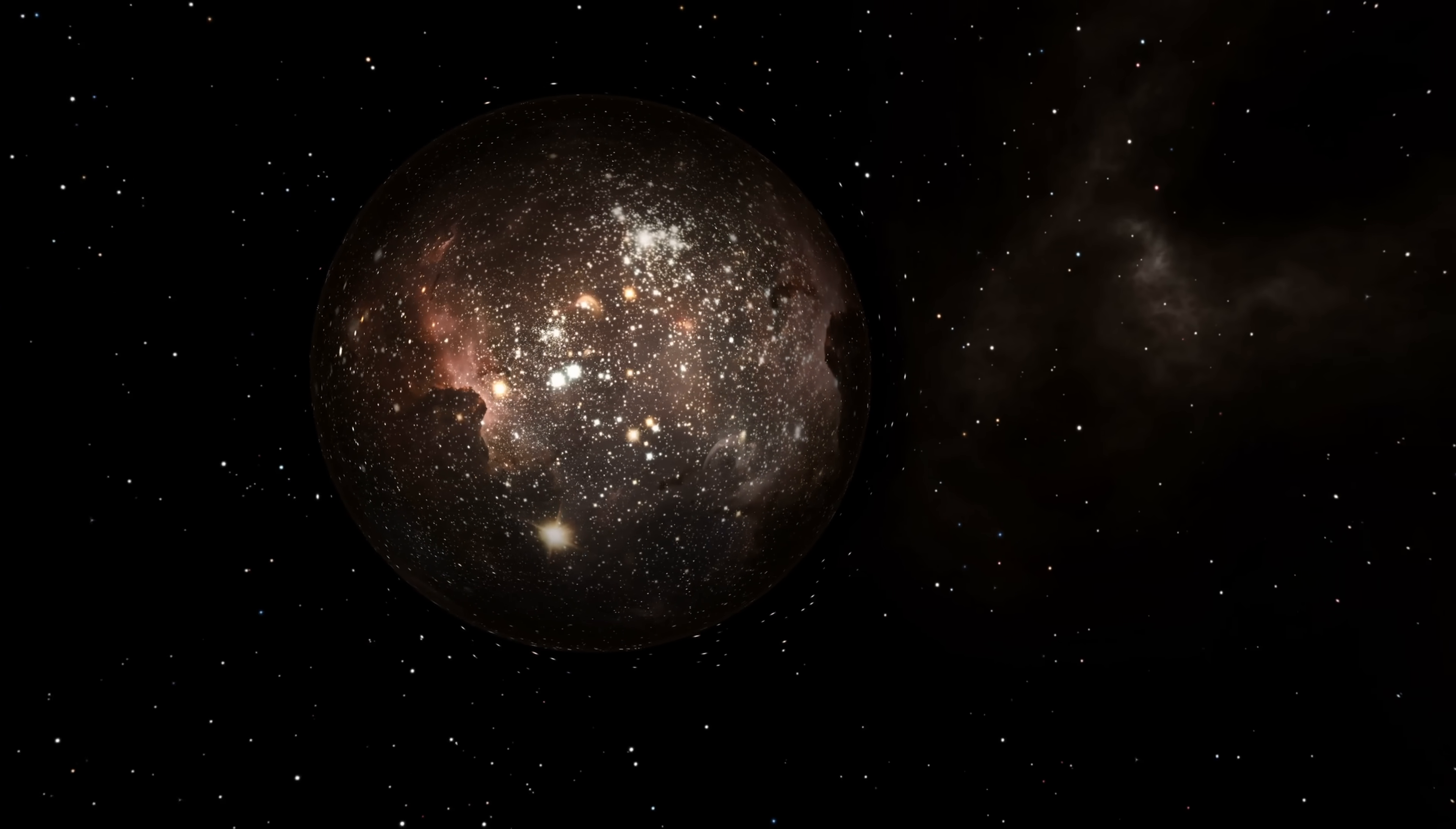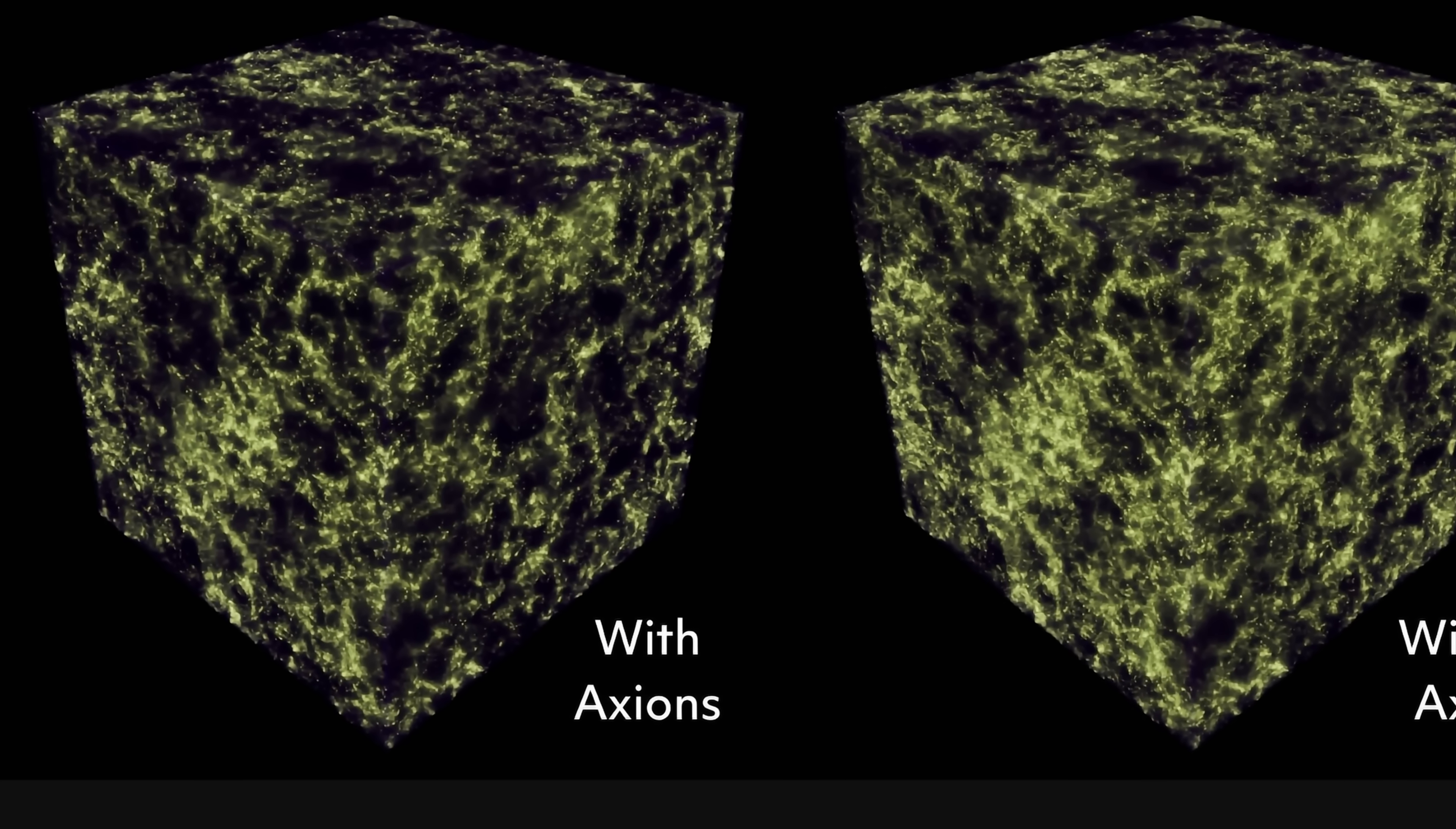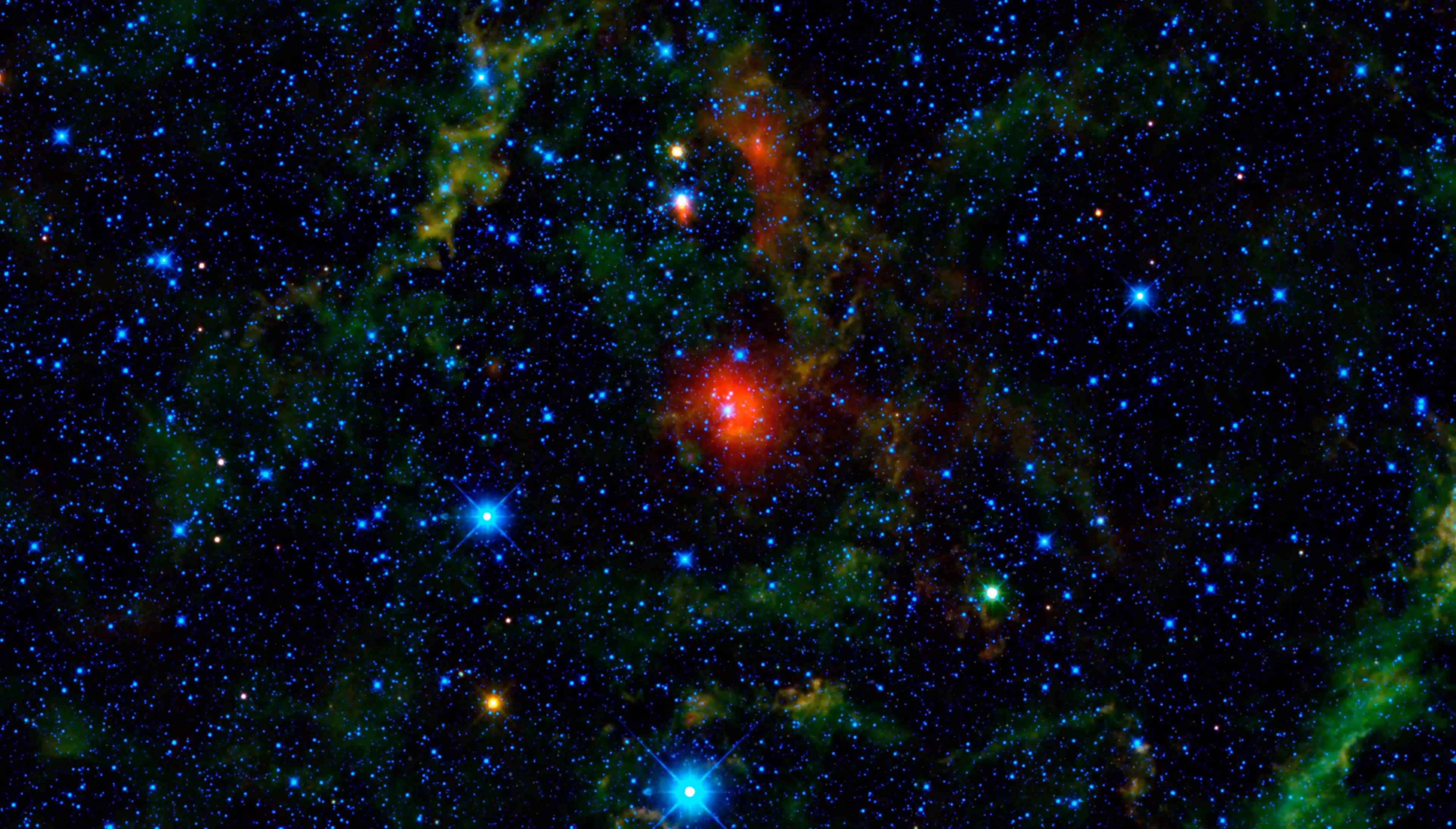Yet if you replace everything with axions, which in comparison are believed to be extremely minuscule and very low in mass, actually almost acting like waves instead of particles, the clumpiness drops dramatically, the universe becomes very similar to what it really is, and most importantly, this whole tension thing kind of disappears.